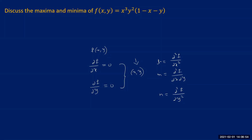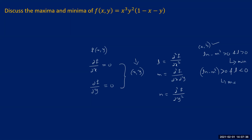At each stationary point we evaluate these three values and verify the conditions. When LN − M² is greater than zero and L is also greater than zero, the function attains its minimum at that stationary point. If LN − M² is greater than zero but L is less than zero, then the function attains its maximum at that stationary point.